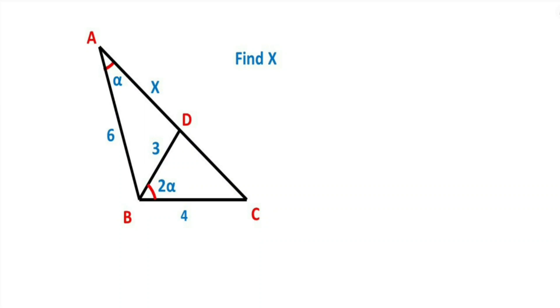In this video we have one triangle. Here is 4, here is 6, and then this side is given as 3 units. The ratio of these two angles is given as 2α, and then x is asked.